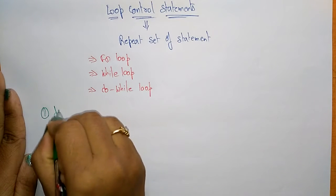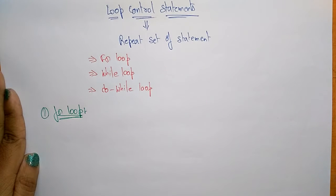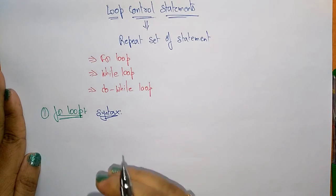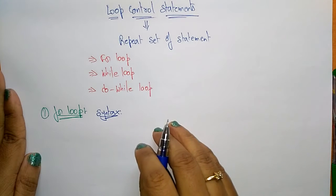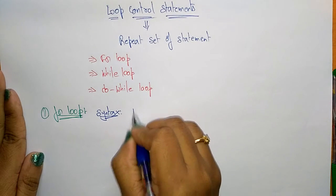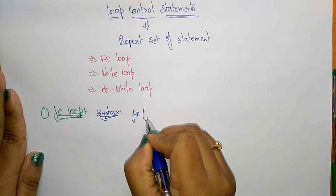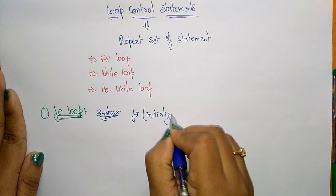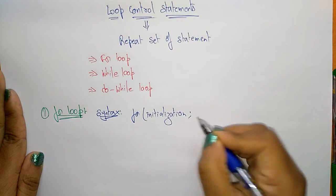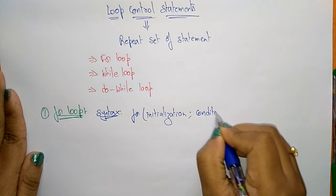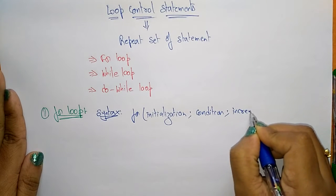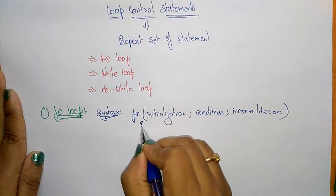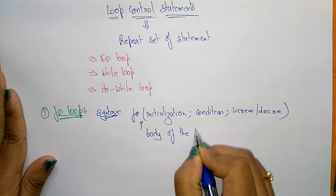Let us discuss one by one. The first one is the for loop. Let me write the syntax for the for loop — just like decision statements, I'll explain the syntax, flowchart, and a simple program. For the for loop, you write 'for', and within the parentheses you have three arguments: initialization, semicolon, condition, semicolon, increment or decrement operator.